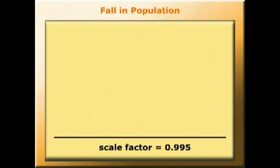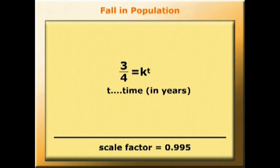The future period we're interested in, in this case, is when the population is only three quarters of its present size. So 3/4 equals k to the t, where t is the time period expressed in years, and k is the scale factor.